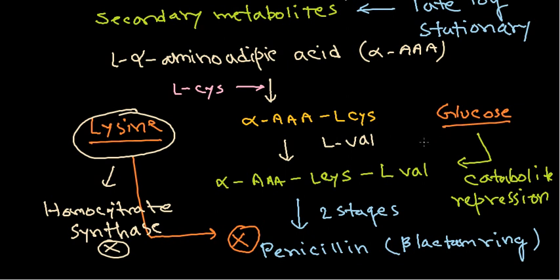Penicillin and other secondary metabolites are usually produced once the growth of bacteria levels down during the stationary phase. Because of catabolite repression, the presence of glucose is not considered good for penicillin productivity. So we never put glucose as the sole carbon source; instead we use lactose, which is a slow-metabolizable sugar. That's about the biosynthetic pathway of penicillin production.